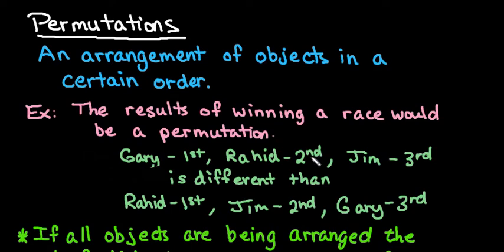For this video what I want to do is talk to you about the definition of permutation. So a permutation is arrangement of objects in a certain order. So this is the key element to whether it's a permutation or a combination. A permutation, the order is important.